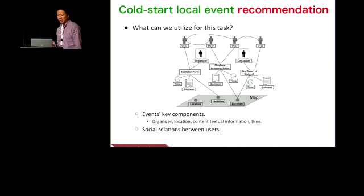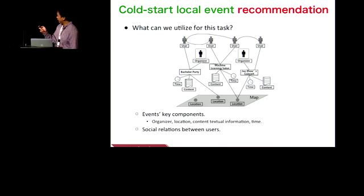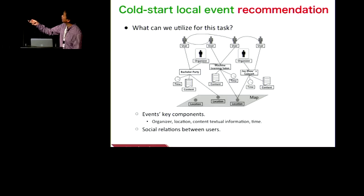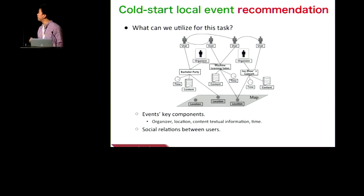So if we want to construct the model, we should decide what knowledge we can use in this task. This is a network of events. As I discussed previously, there are many key components connected with events. And besides, social relations occur between many users. Many previous studies show that connected users tend to have similar preferences, so we can use them.